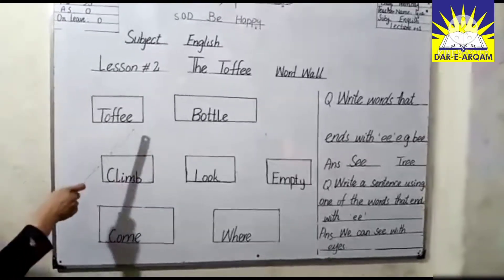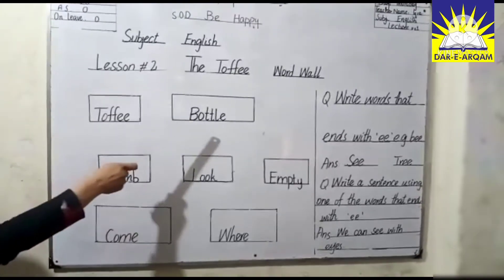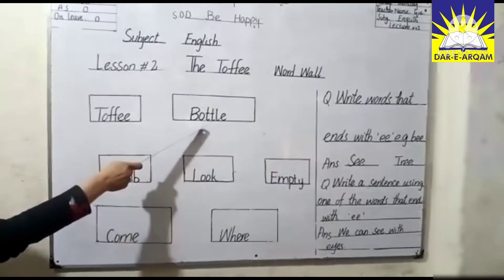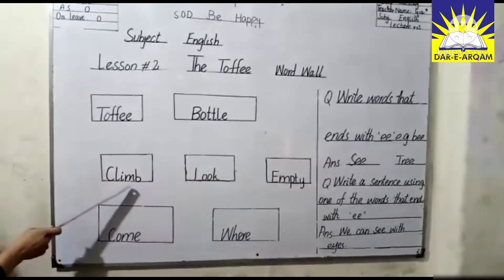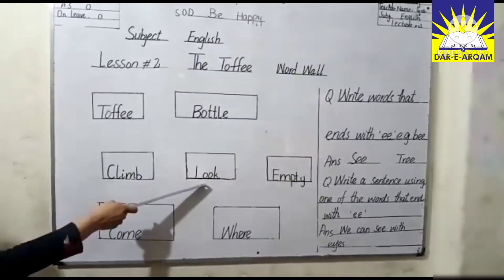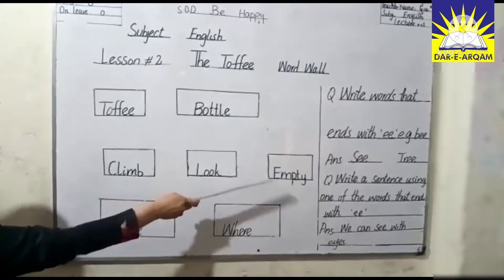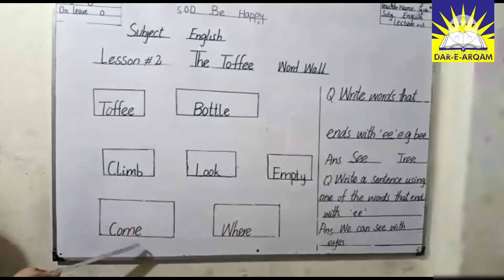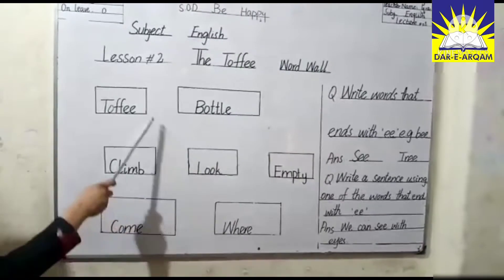The first word is toffee. The second one is bottle. The third one is climb. The fourth one is look. The fifth one is empty. The sixth one is come. And the last one is wear.